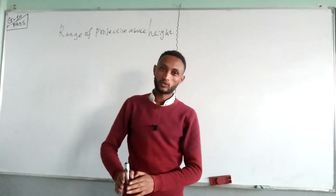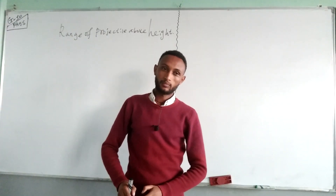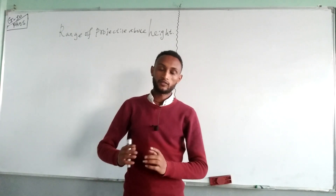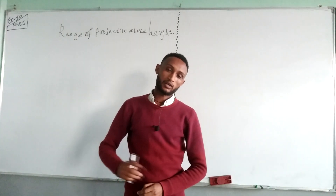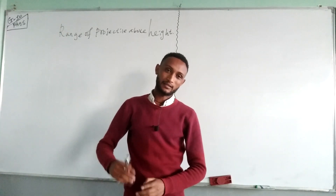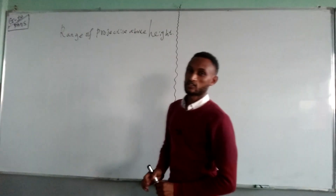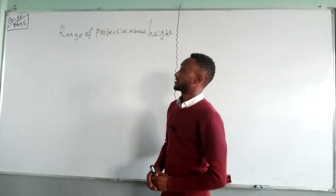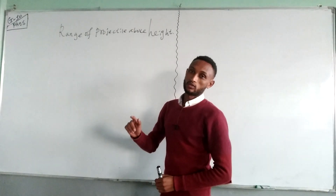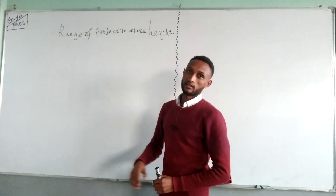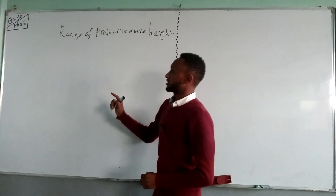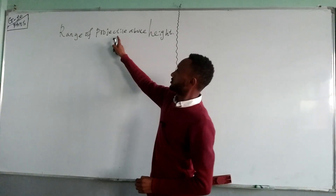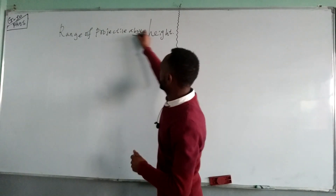In the previous video, we saw the range of projectiles when the projectile is initially projected at a projection angle or at an inclined plane with initial velocity. We found that the range of a projectile is given as 2u² cos θ sin θ over acceleration. Today in this video, we see the projectile range which can be above some height.